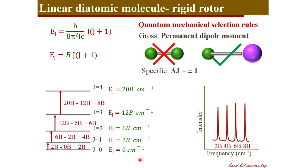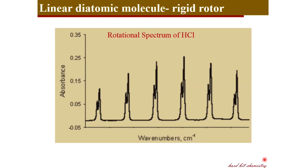The first spectral line occurs at 2B, and successive lines appear at 4B, 6B, etc. The separation between adjacent lines in the spectrum is therefore 2B units. As an example, in the spectrum of hydrogen chloride, adjacent peaks are separated by 2B = 21.2 cm⁻¹. From this 2B value we obtain the rotational constant B, which involves the moment of inertia I expressed in terms of masses and bond length. So from the spectrum we can determine the bond length if the masses are known, or vice versa.